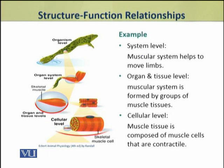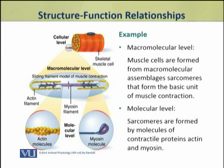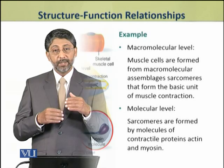These muscle cells contain units or assemblies called sarcomeres, which are the bases of contraction. These sarcomeres are themselves made up of two types of contractile proteins which have the ability to contract and expand. These proteins form the molecular basis of this entire phenomenon — because of these proteins, the cells are contractile, the tissue formed from these cells is contractile, the organs formed from this tissue are contractile, and as a result the entire organism moves.